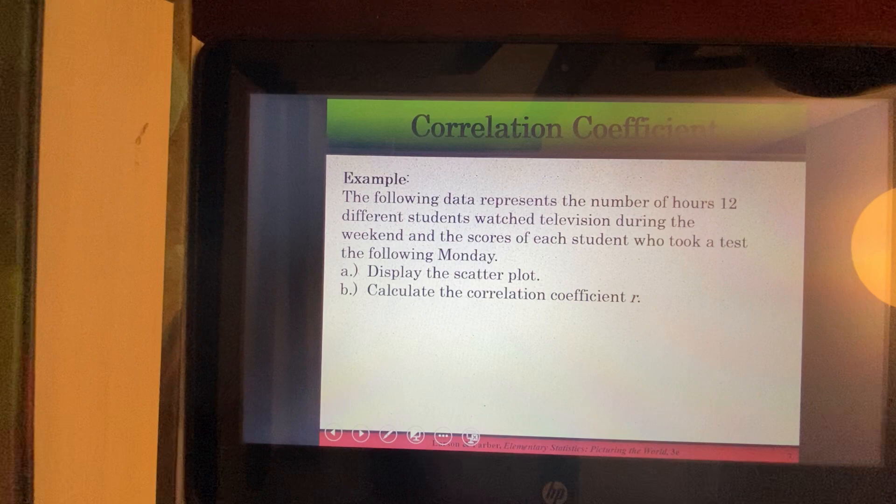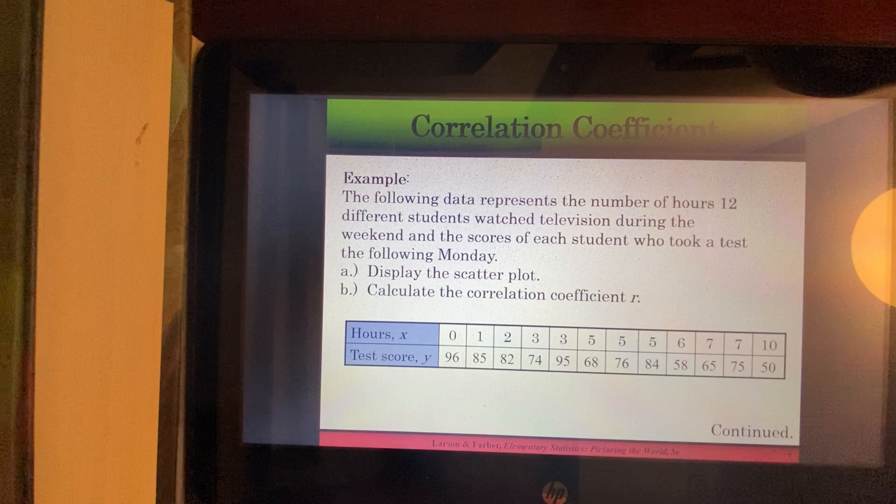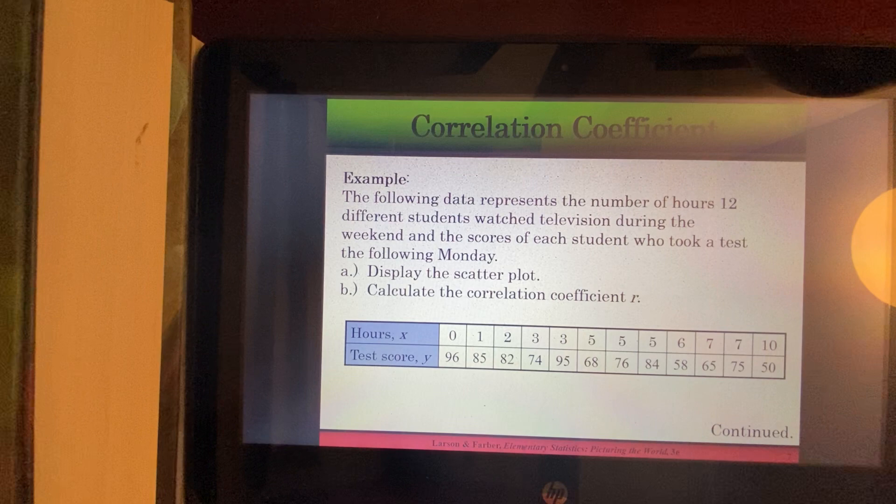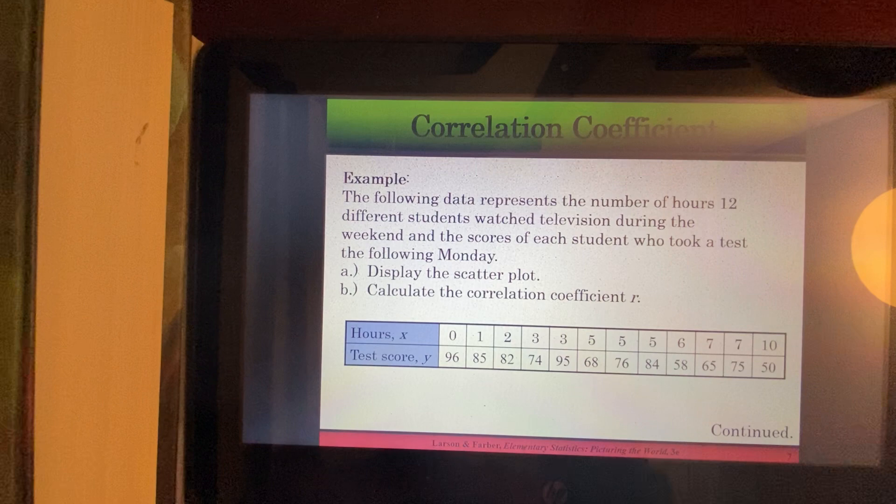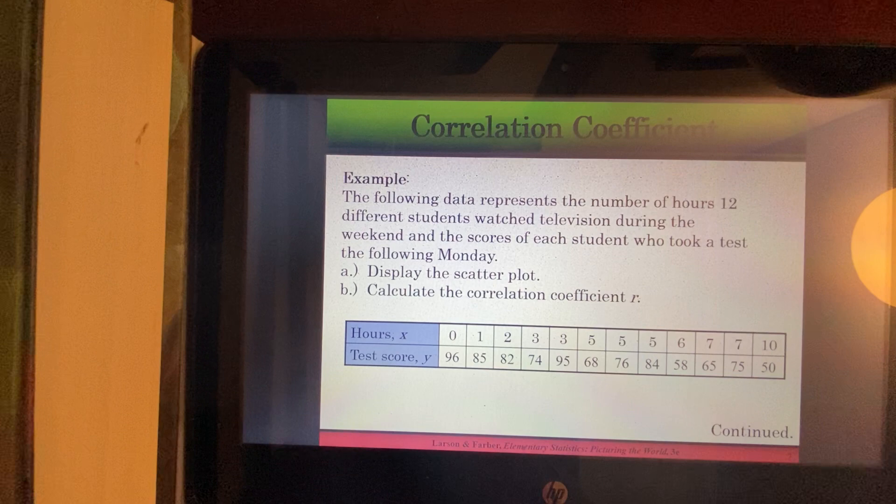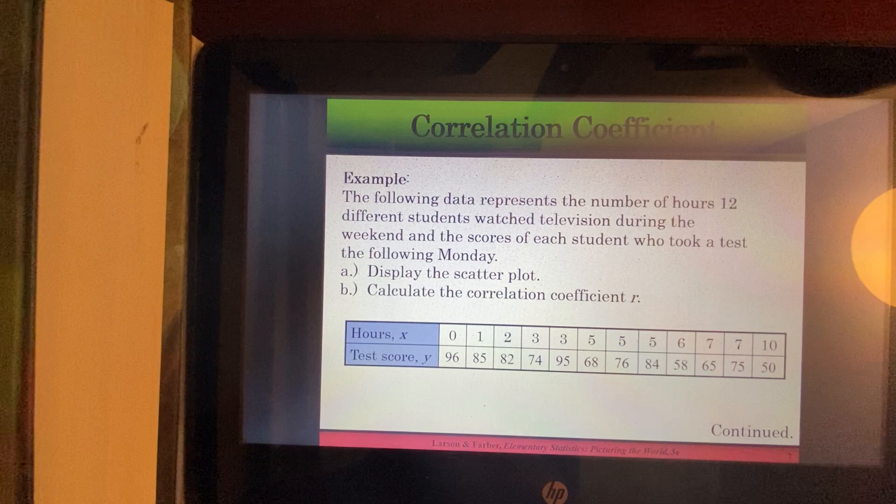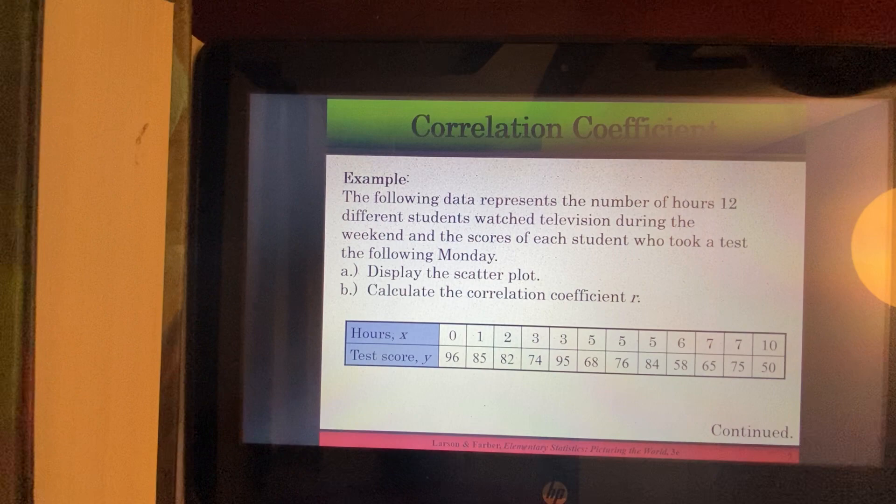Okay, so we're going to do an example. The following data represents the number of hours 12 different students watched television during the weekend and the scores of each student who took a test the following Monday. Okay, so we've got the X's are the hours. So that's your explanatory variable or the independent variable. And here we have the Y's, which are test scores. So that's your response variable or your dependent variable. And each one of these ordered pairs is representing one student.